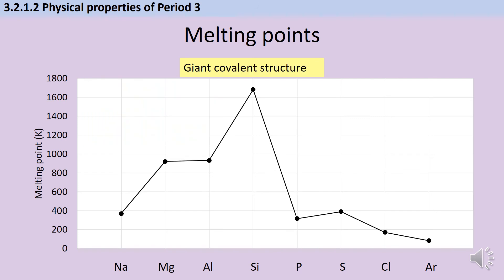Because silicon forms giant covalent structures, this means that there are strong covalent bonds between every atom. And as we know, covalent bonds take a huge amount of energy to overcome. So silicon has a very, very high melting point.